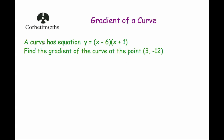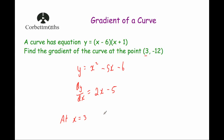Our next question: a curve has equation y equals (x − 6)(x + 1). Find the gradient of the curve at the point (3, −12). We need to expand the brackets first: x squared plus x minus 6x minus 6, which gives x squared minus 5x minus 6. Differentiating gives dy by dx equals 2x minus 5. At x equals 3, dy by dx equals 2 times 3 minus 5, which is 6 minus 5, equal to 1. So the gradient of the curve at the point (3, −12) is 1.